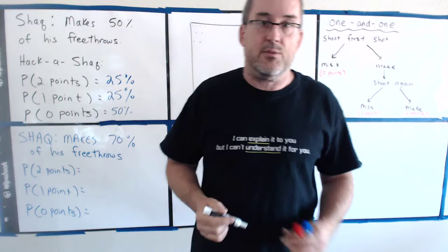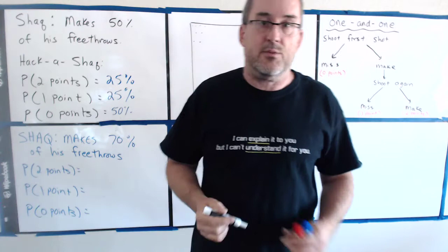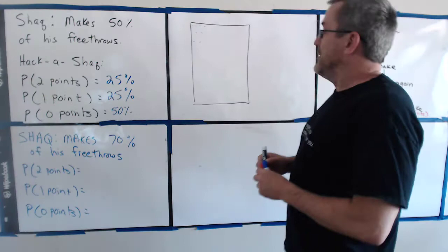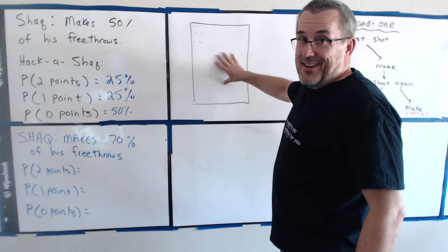You know, a bazillion doesn't really mean anything. It's just getting at the idea of in the long run, if you do this thing over and over and over again. So if you do this over and over again, now this time it's 70%. So of the bazillion dots in here, what I want to show is that 70% of the time he makes and 30% of the time he misses.